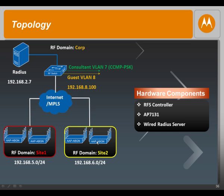In our topology in the lab today, we will create two RF domains. One would be Site-1, one would be Site-2. Site-1 is going to be a subnet of 192.168.5.0. Site-2 is going to be a subnet of 192.168.6.0. You could assume these two sites being in different countries, or in the same country but different physical locations — one could be on the East Coast, one could be on the West Coast. And our corporate RF switch could have its own RF domain called Corp. The essential hardware components required are the RFS controller and the AP731s, and a wired RADIUS server. From the RF domain standpoint, all the config is only done in the RFS controllers.